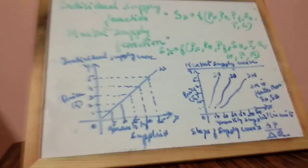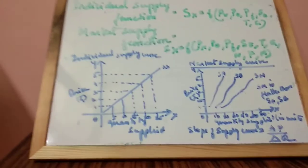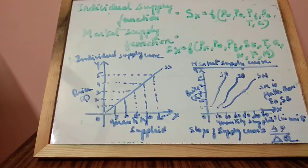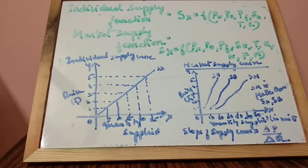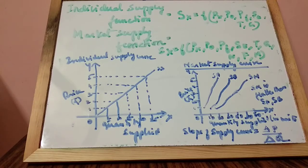Now, let's see the supply function. What is supply function? Supply function refers to the functional relationship between quantity supplied for a particular commodity and the factors influencing it.